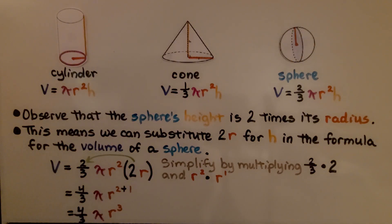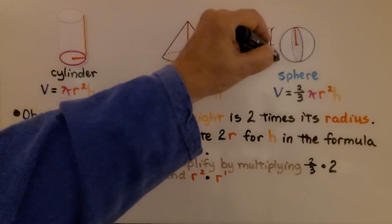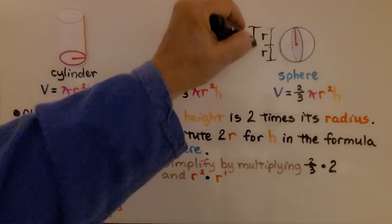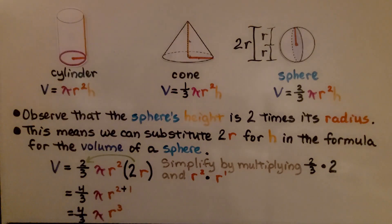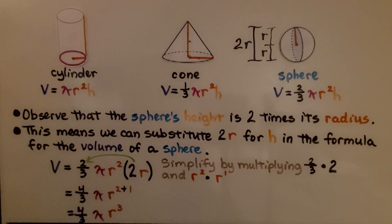This means we can substitute 2r for h, for the height, in the formula for the volume of a sphere. We can say the height is 2r. We have the volume equals 2/3 πr² times 2r. And we simplify by multiplying the 2/3 times the 2. That'll give us 4/3. And we multiply this r² by the r. And that's really r to the first power. We get 4/3 πr³, 4/3 π r to the third power.